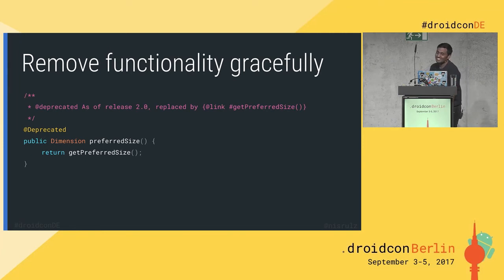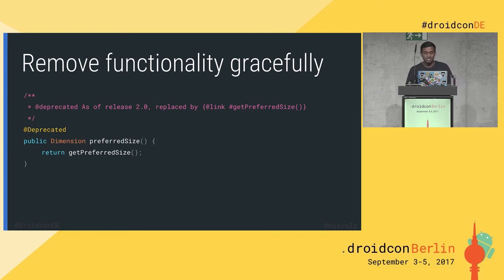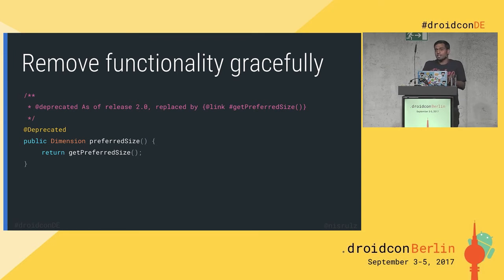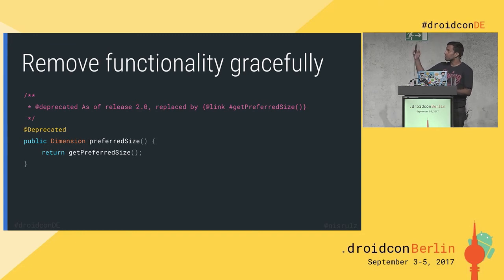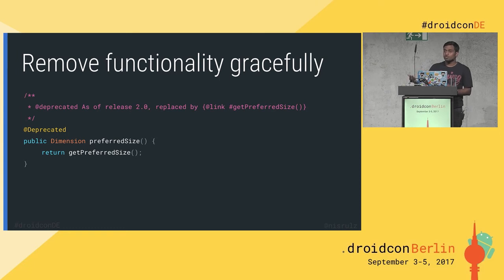Remove functionality gracefully. No one does this — beginners especially, when removing a public API from their library, just delete it. So it exists in version 1.0 and doesn't exist in version 1.2 without any warning. The way to handle this is by adding the @Deprecated annotation, marking it as going to be removed in a future version. Do it in one version, then remove it after one, two, or three versions — don't remove it instantly. Add a Javadoc explaining what to use instead, such as 'as of release 2.0, replaced by this particular function.'